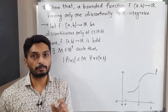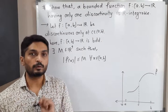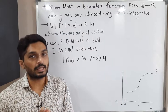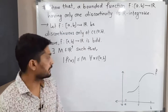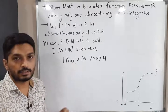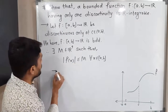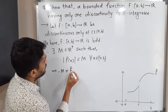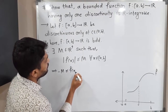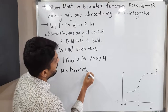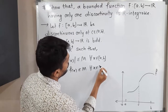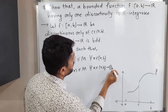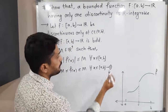We know that |a| ≤ b if and only if −b ≤ a ≤ b. Using that result here, since |f(x)| ≤ M, we can write −M ≤ f(x) ≤ M, and this is true for all x in the closed interval [a, b]. This is a very important result; I am calling it inequality (1).